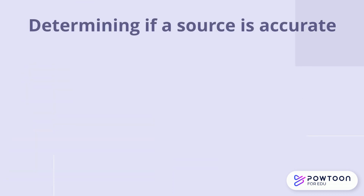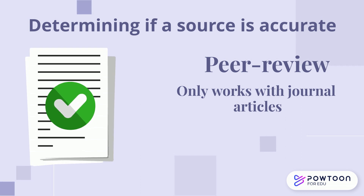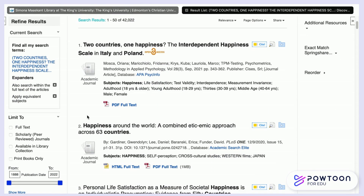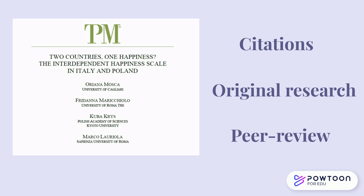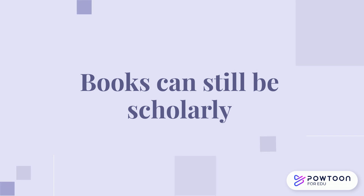A second technique to determine accuracy is to check if the article is peer-reviewed. This will only work with articles, as books do not undergo a peer-review process. If an article has gone through the peer-review process, there is a higher chance that the article is accurate, and this is one of the reasons the peer-review process is so highly regarded in academia. Many databases will have filters that allow you to narrow your results to peer-reviewed materials. Books do not go through the same peer-review process; however, academic book publishing includes a rigorous editorial review process, and these books are still considered scholarly.